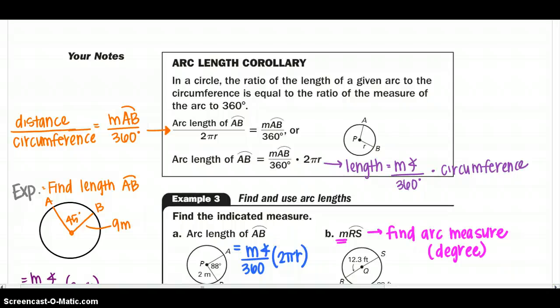Continuing on with our arc length corollary. So in a circle, the ratio of the lengths of a given arc to the circumference is equal to the ratio of the measure of the arc to 360. So they have given us two equations just broken down a little bit differently.